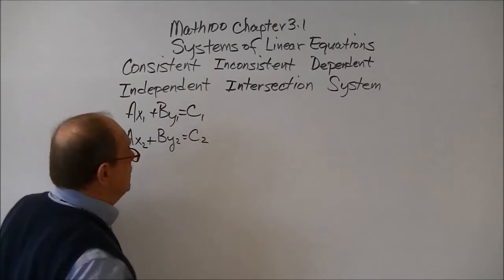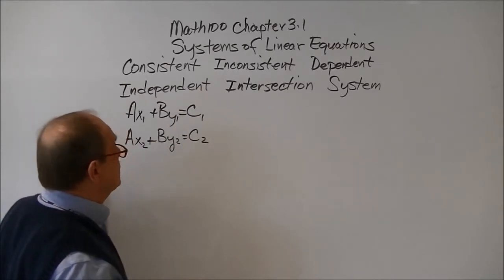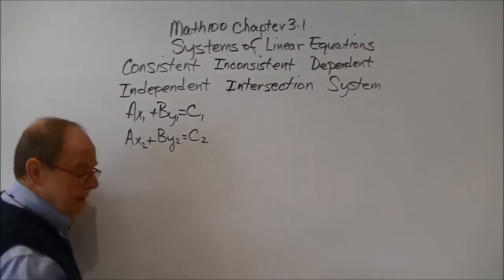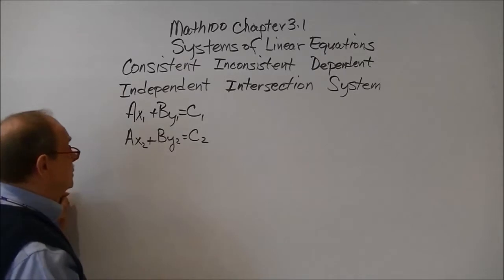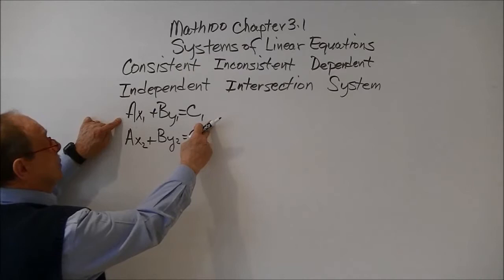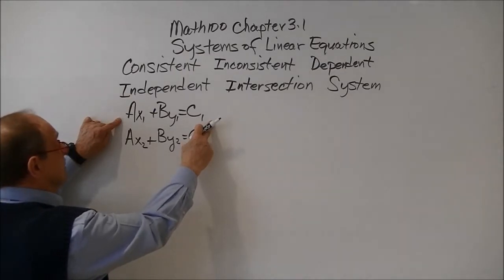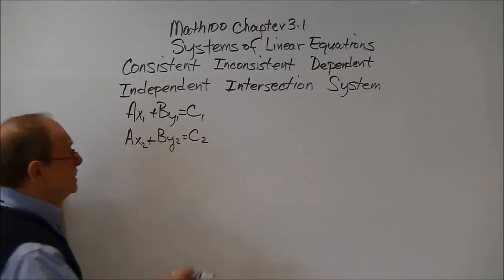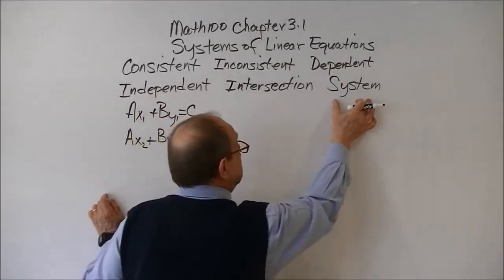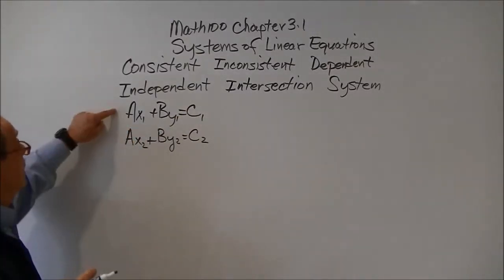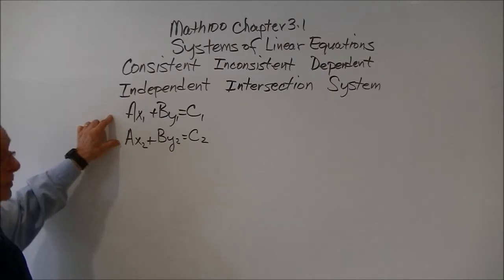Going on now to Chapter 3, Section 1, we're dealing with systems of linear equations. This leads from Chapter 2, where we did standard form of the linear equation in two variables. Now we're moving into what is called systems of equations, where instead of just having one equation, we have two equations.